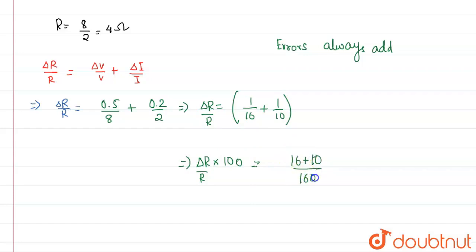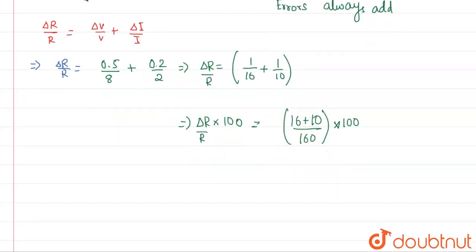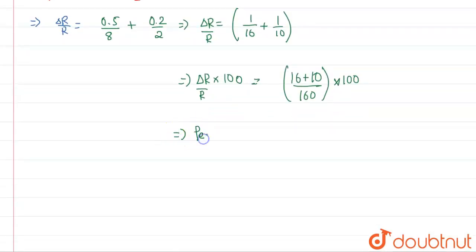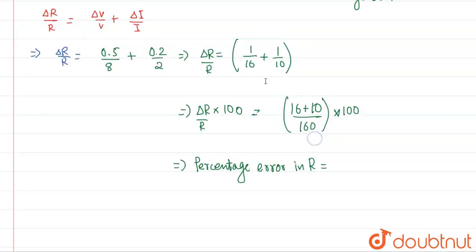This will become 16 plus 10 divided by 160 into 100. So basically over here when you calculate, this is percentage error in R.